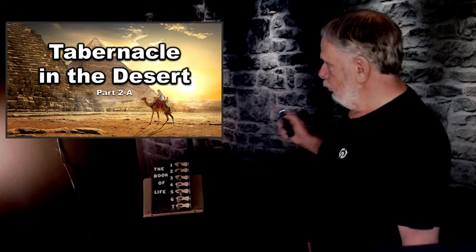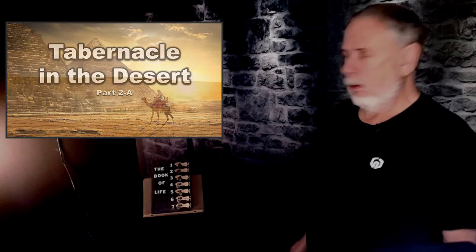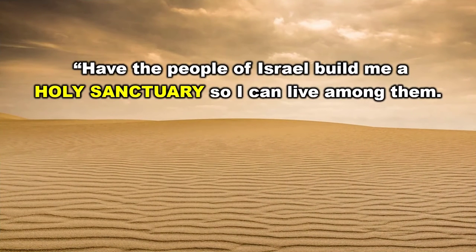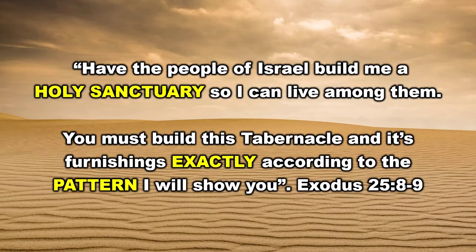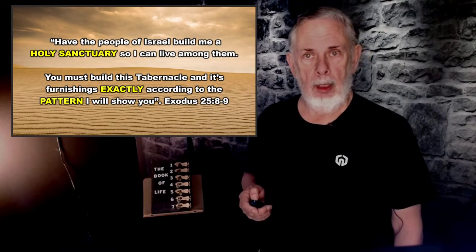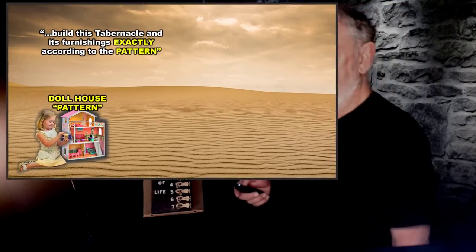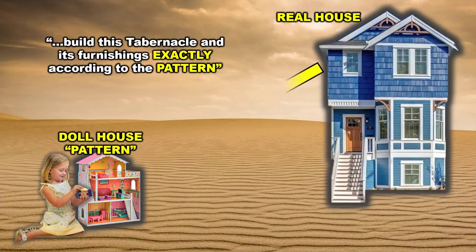God told Moses when he was up on the mountain: 'Have the people of Israel build me a holy sanctuary so that I can live among them.' He continued: 'You must build it according to the exact plans — the pattern — that I'm going to give you.' This is found in Exodus 25. What did he mean by a pattern? Well, this is kind of like a dollhouse that a child would have — a miniature of the real thing.